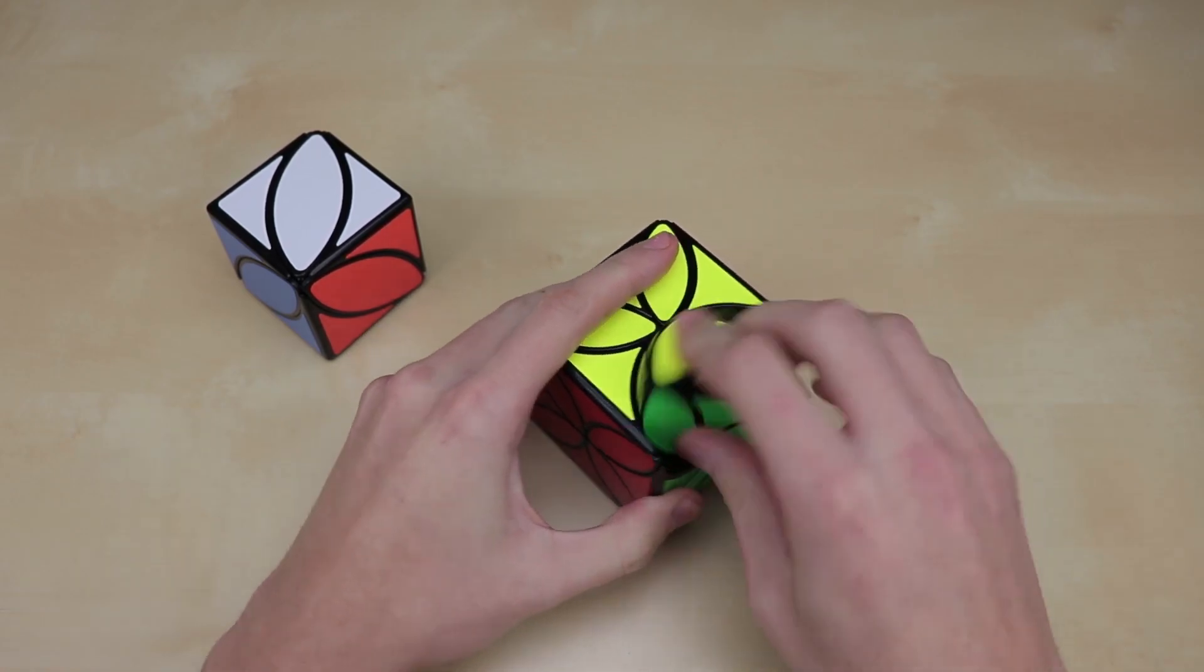I think the hardest part for me of the Curvy Copter was actually the corners, and this one has no corners. So it should be quite a lot easier, just like how the Ivy Cube is a simplified version of this cube. And I'll solve it again later. I'm not going to do it here on camera.